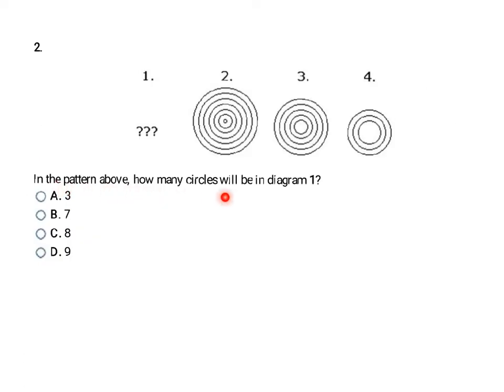Number two here asks in the pattern above how many circles will be in diagram one? So I'm decreasing each of the number of circles in two, three, and four. So in circle two here I have seven circles. In circle number three I have five circles. And then in picture number four I have three circles. So I look at the pattern here it's going seven, five, three. It's decreasing by two each time. So one minus two will get me to seven. If I have nine circles in the beginning that's going to show the pattern of minus two each time. So my final answer here is D, nine circles in diagram one.